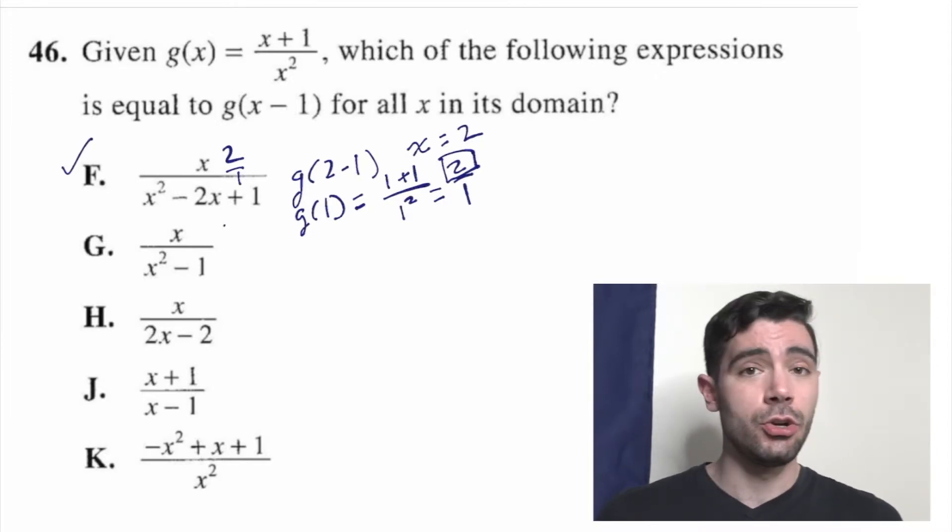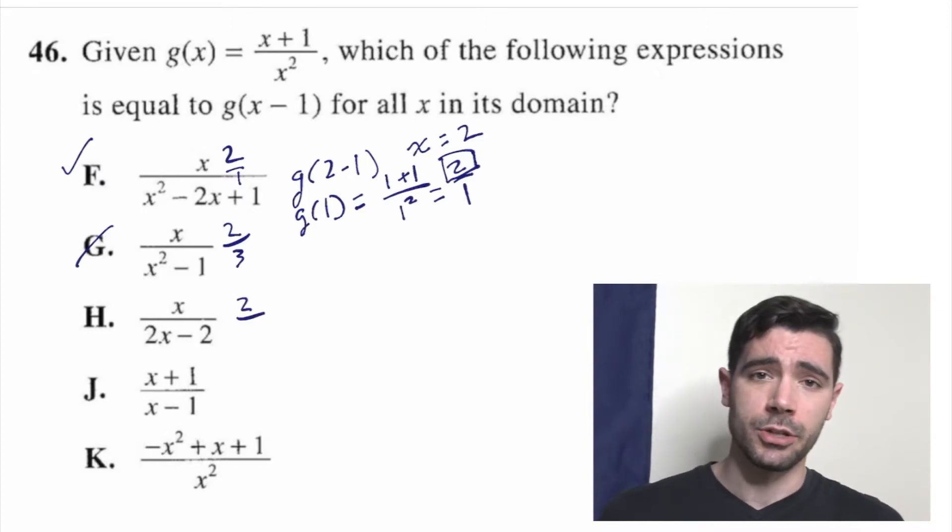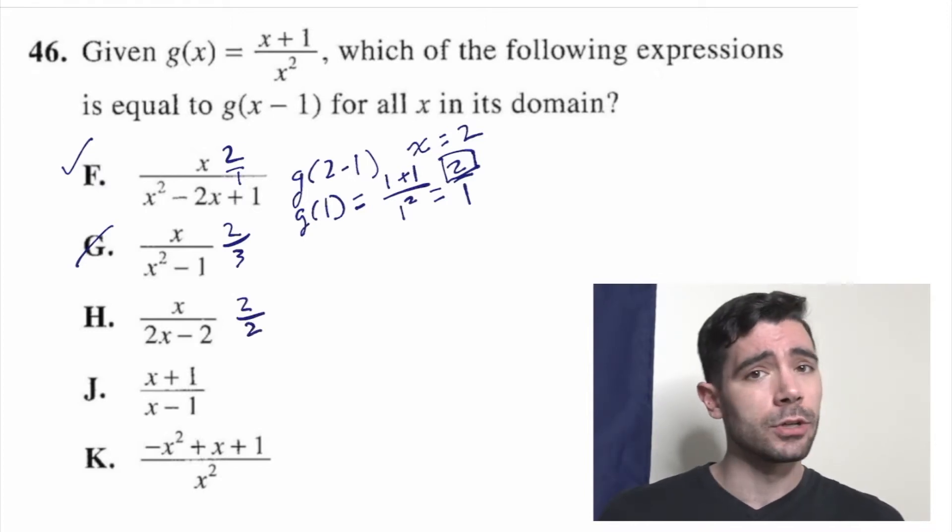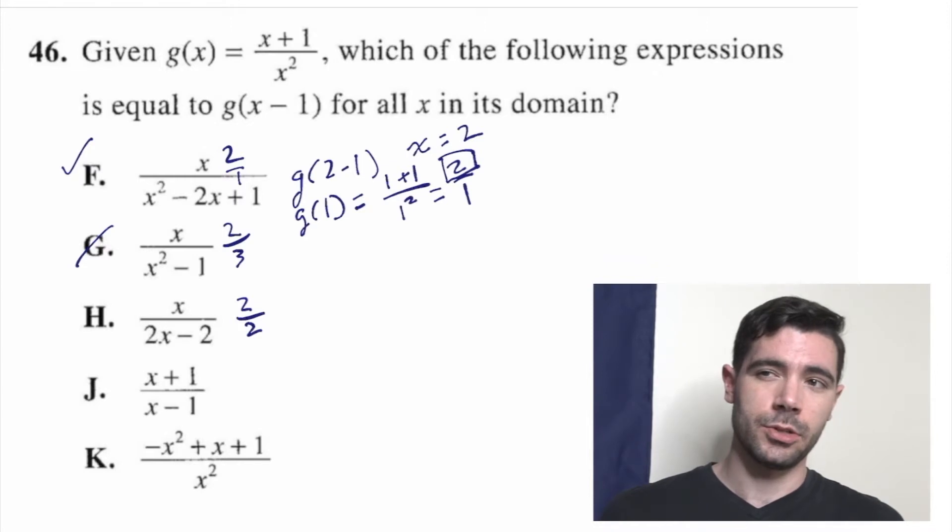We look at G. 2 over (2 squared minus 1). 2 squared minus 1 is 3, so that's 2 over 3, which is not the same as 2. Goodbye, G. H gives us 2 over (2 times 2 minus 2), so 2 over 2, which is 1, which is not 2. Goodbye, H.